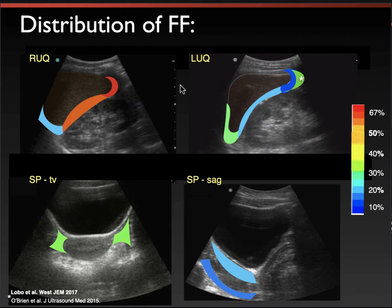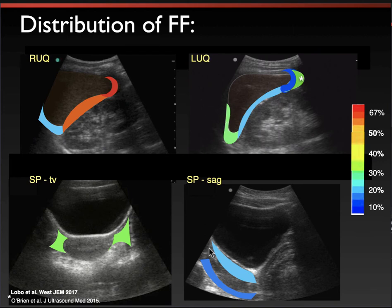This is a heat map I made from a couple of studies that looked at thousands of trauma patients and determined where free fluid was found on their FAST exams. The warmer colors — red and orange — indicate where more patients had significant free fluid. The cooler colors, green and blue, represent fewer patients. Even in the darkest blue areas, this is still 10% of our trauma patients, which we certainly don't want to be missing when there's an injury we can predict and triage.